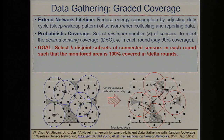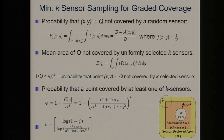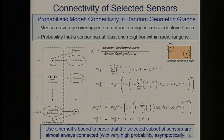Select k disjoint subsets of connected sensors each round such that the monitored area will be eventually covered 100% within delta rounds. The key challenge is proving probabilistically — with high probability — that the graph stays connected while maintaining the desired sensing coverage. We have developed four different types of randomized algorithms for this problem. I can also compute, with a certain model, the minimum number of sensors needed to sample at any time to guarantee desired sensing coverage.